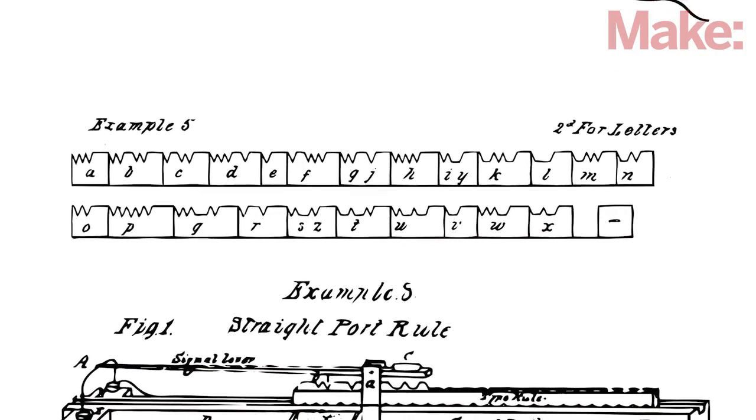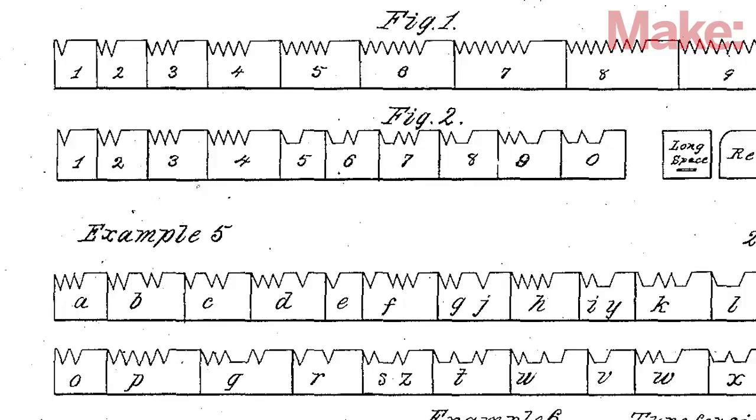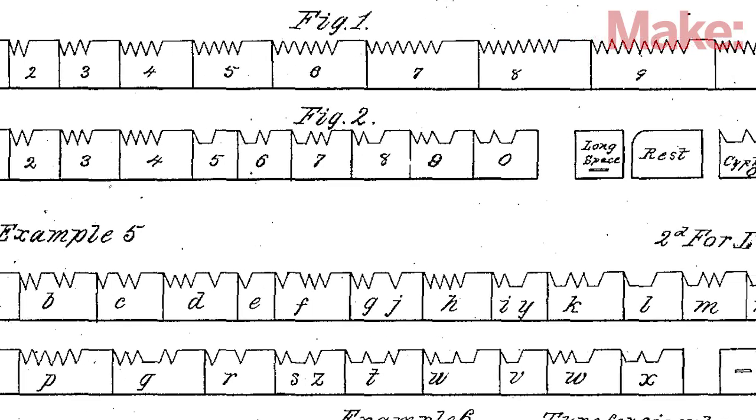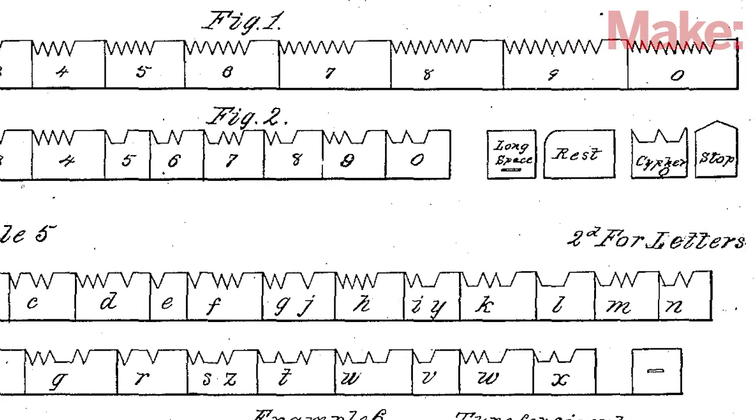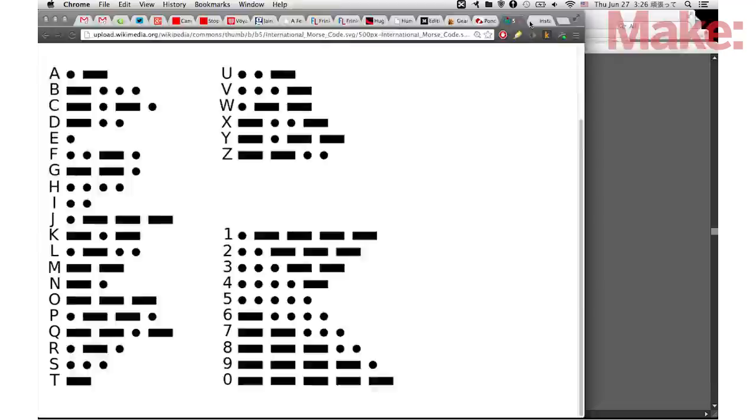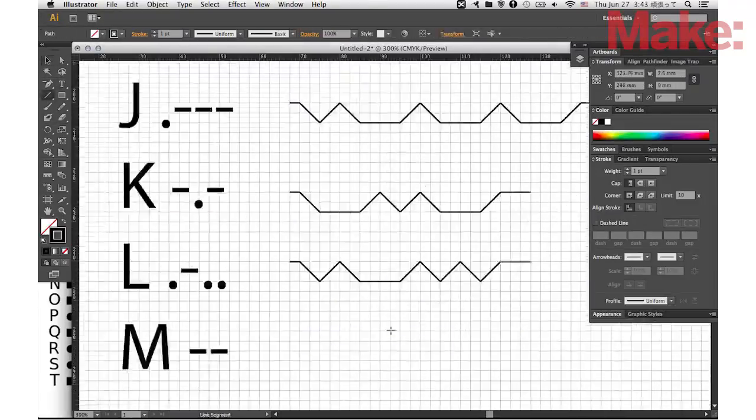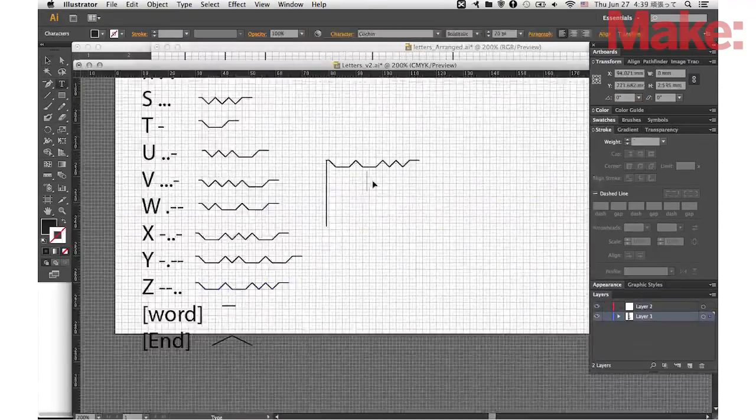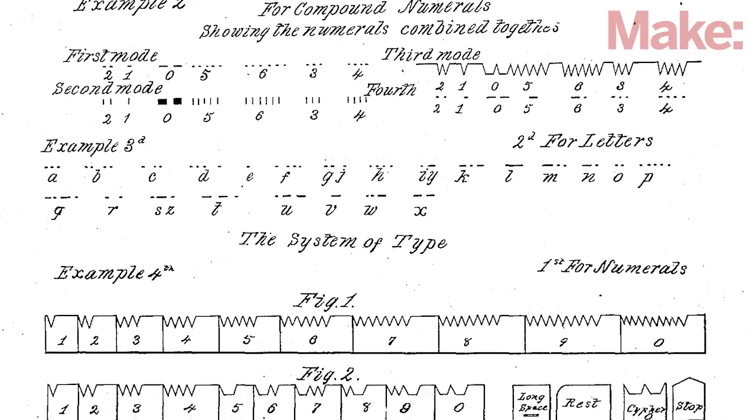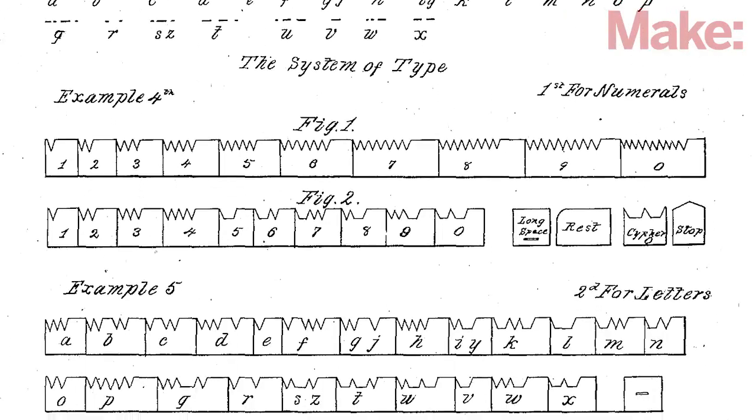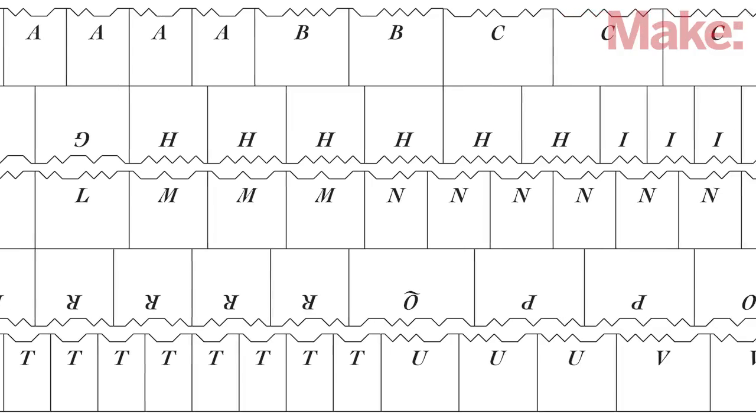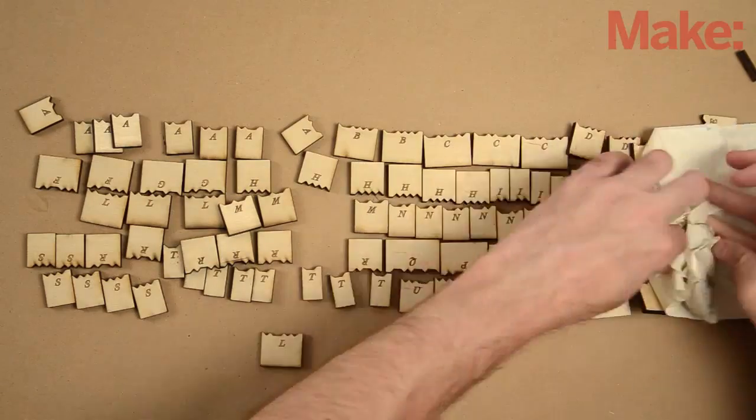The letters are the most important part of this mechanism. Each has a unique and precise pattern of highs and lows shaped into the top. Making these by hand would be tedious and error-prone. Fortunately, they're well-suited for laser cutting, so I create a suitable cutting pattern. The original patent uses a pattern of dots and dashes that predates Morse code. I use modern Morse code when laying out the letters to make my messages more readable.